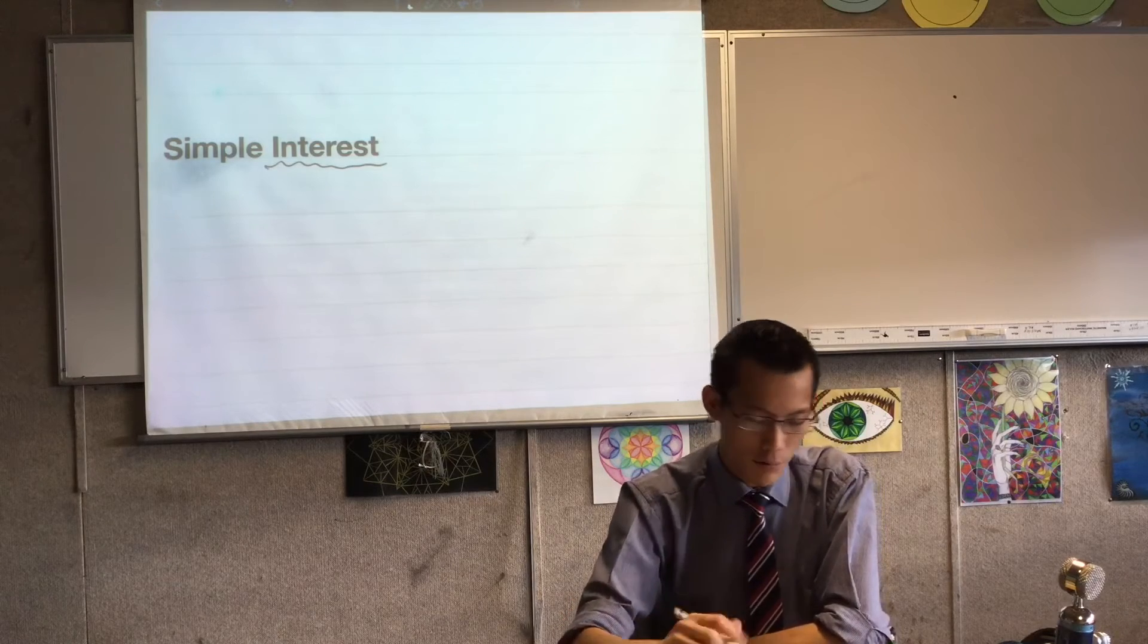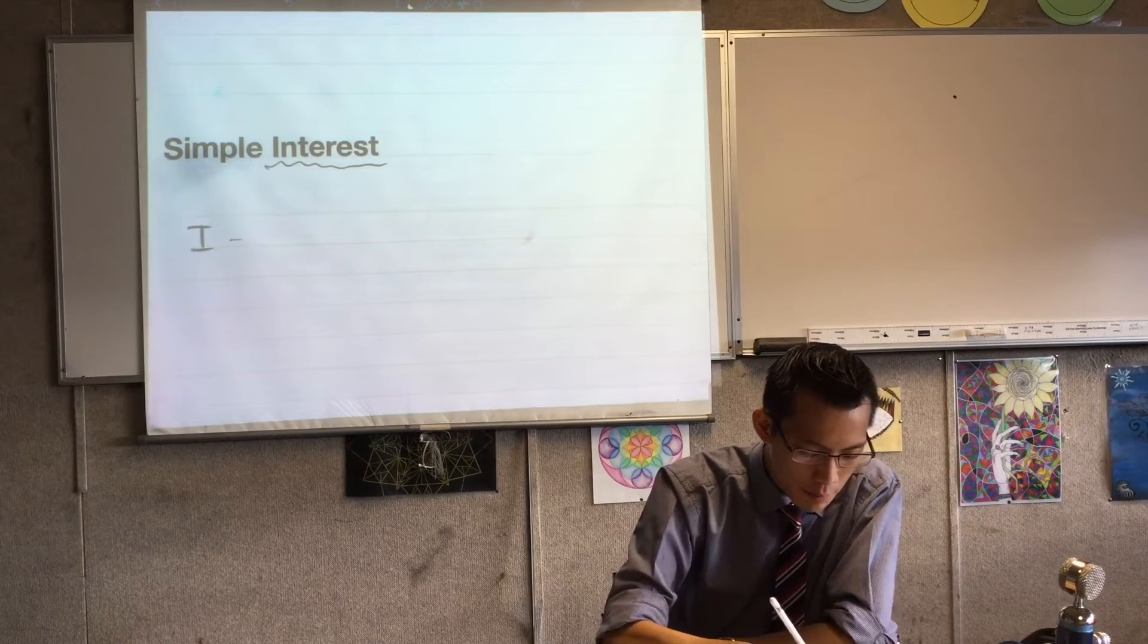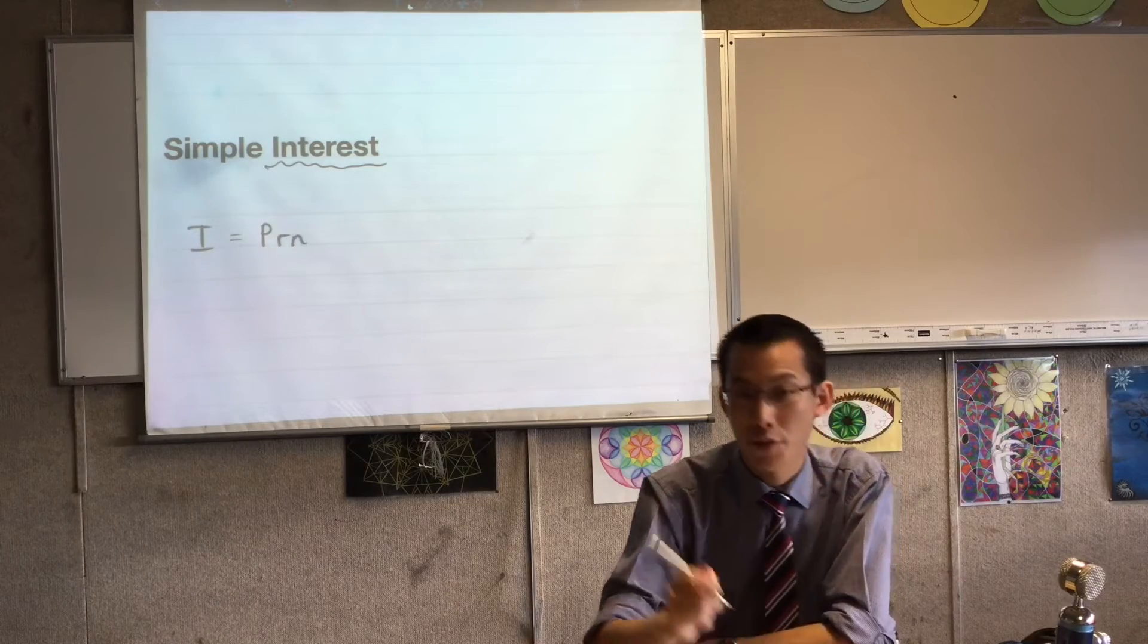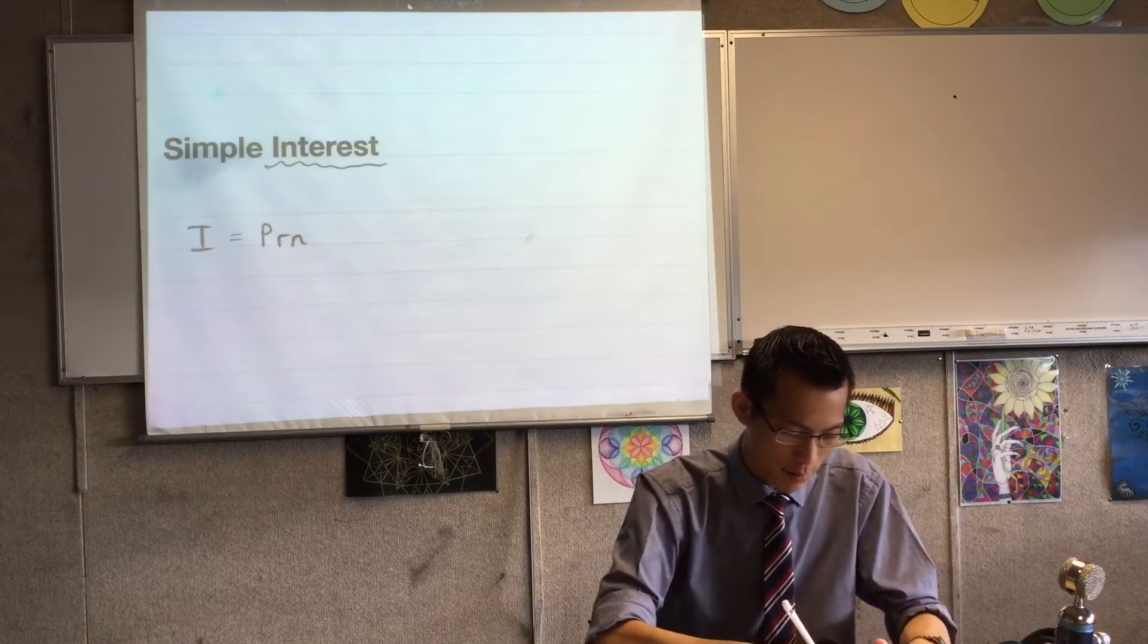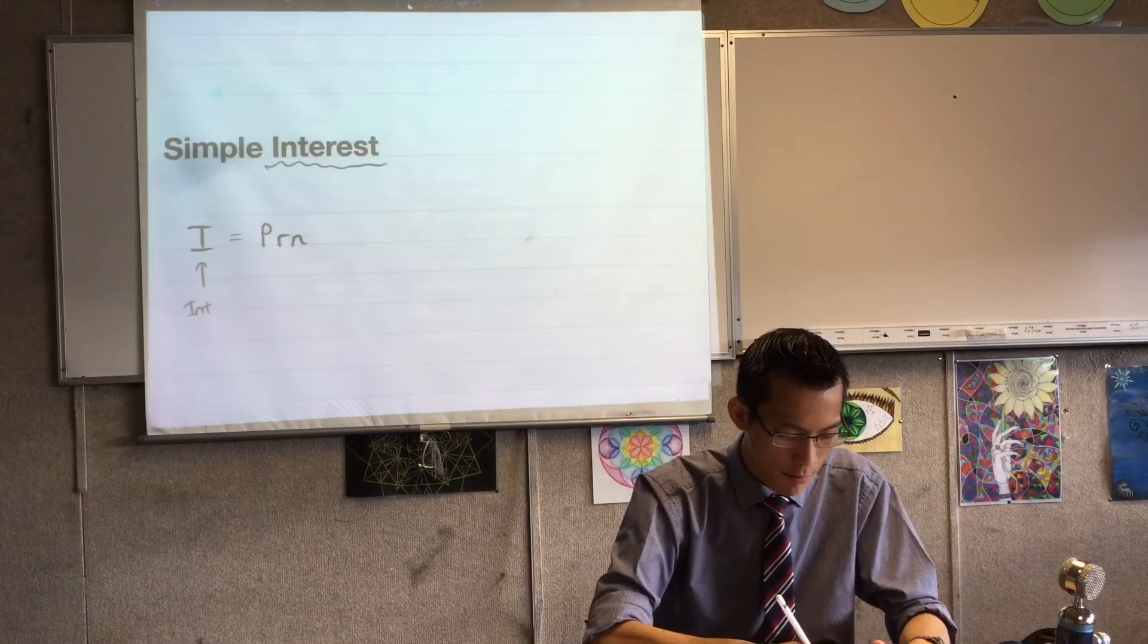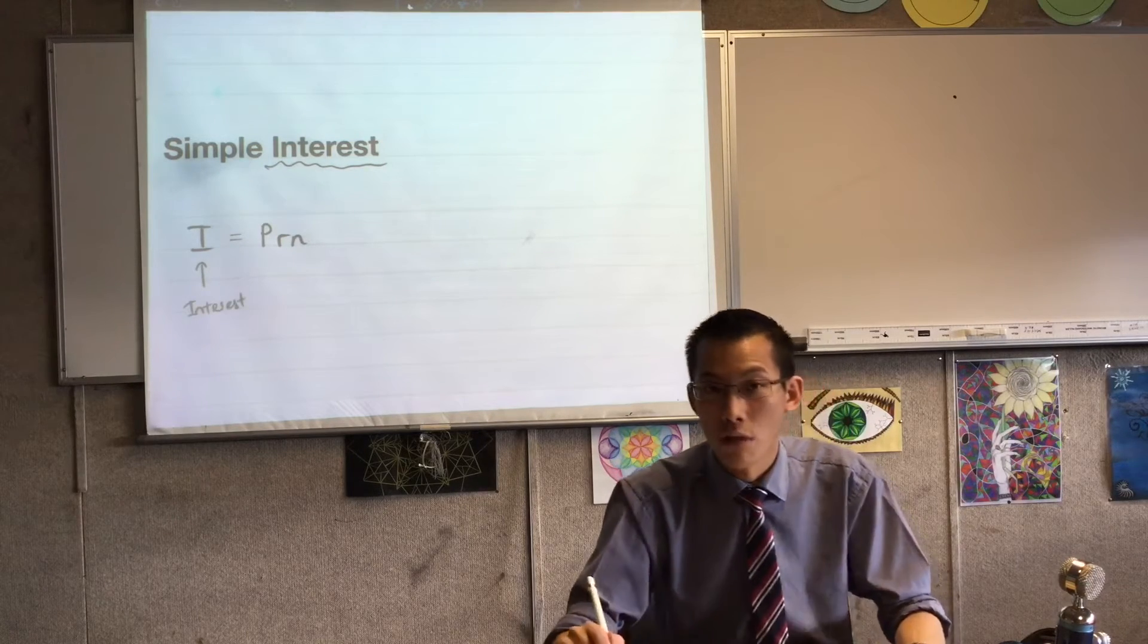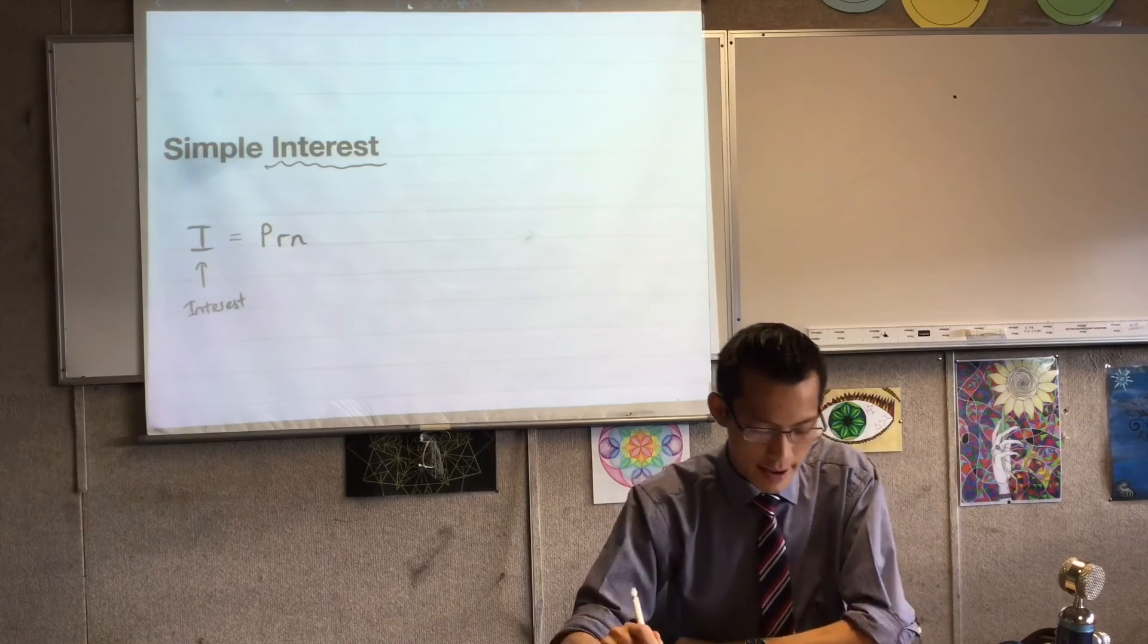So simple interest, I want you to remember, is governed by this very simple formula, and if you remember all the different pieces, it's not that complicated. The I that starts with, that you begin with, is the interest. Like how much is someone going to pay you, or are you going to have to pay for the right of being loaned money?